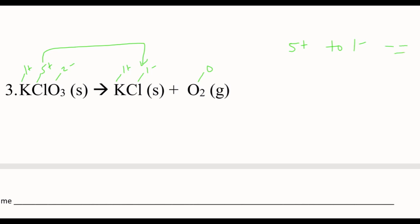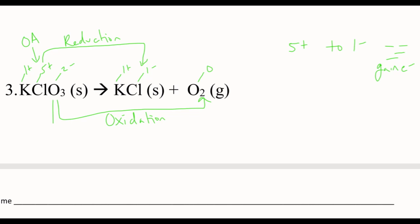Going from 0 to 2+ is getting more positive, which means it's losing the negativity — becoming more positive, losing negativity. That is a loss of electrons, which is oxidation. So nickel is our reducing agent. Chlorine going from 5+ to 1− is becoming more negative, gaining electrons — that means chlorine is our oxidizing agent.